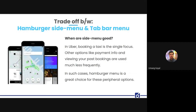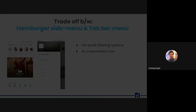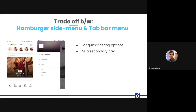Side menus work well in applications with a single focus, like Uber, where the key experience is booking a cab and navigation to other features is secondary. Myntra has shifted its main navigation links to the tab bar on the main page and uses a sidebar menu for quick filtering options and secondary navigation links — a good balance of both.